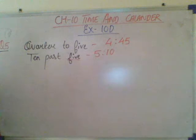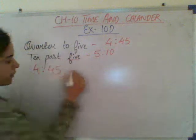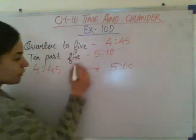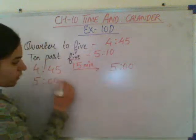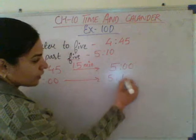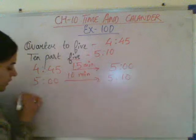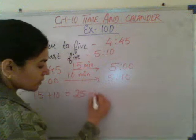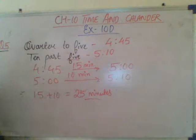Now we have to find for how much time she had to wait. From 4:45 to 5 o'clock, how many minutes? 15 minutes. And from 5 o'clock to 5:10, how many minutes? 10 minutes. So total: 15 plus 10 equals 25 minutes. Kavita had to wait for 25 minutes. The answer is 25 minutes.